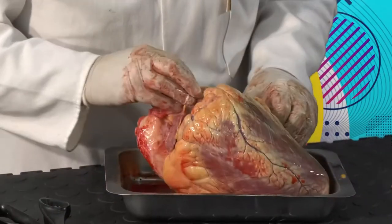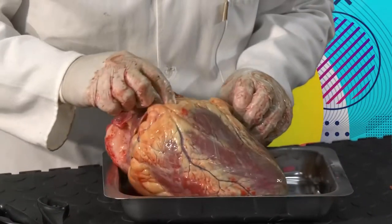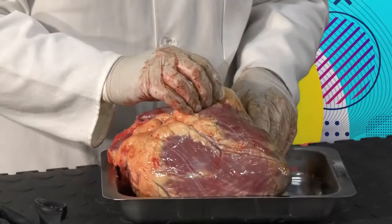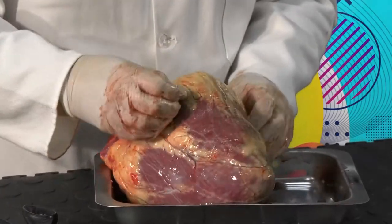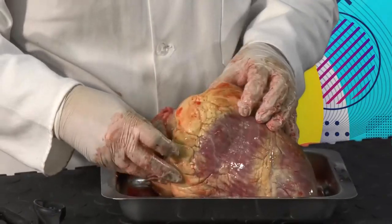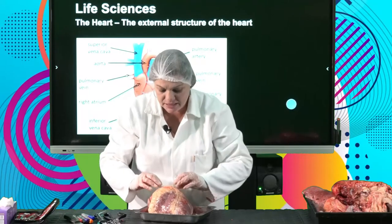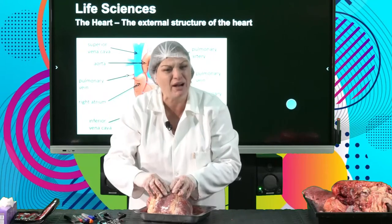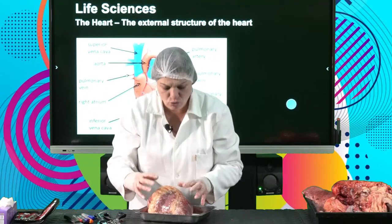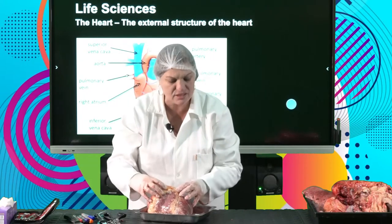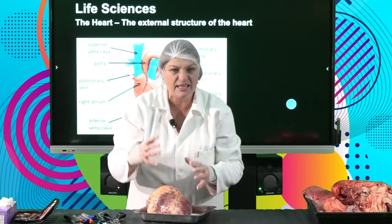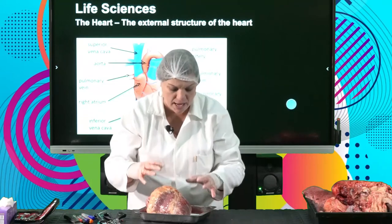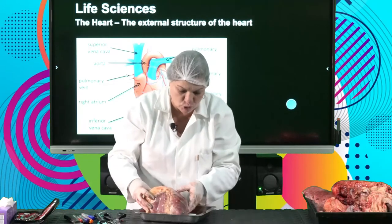What are all these white things? This is going to be fat — adipose tissue. Remember when we looked at mammalian tissue — internal organs need this fat to be able to keep warm and as a shock absorber.